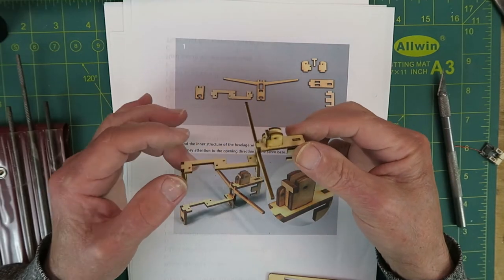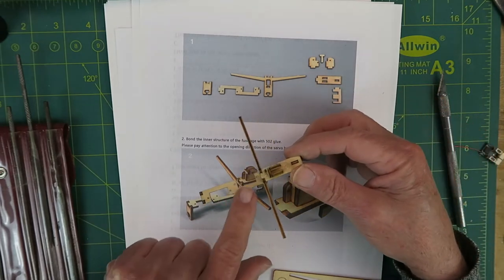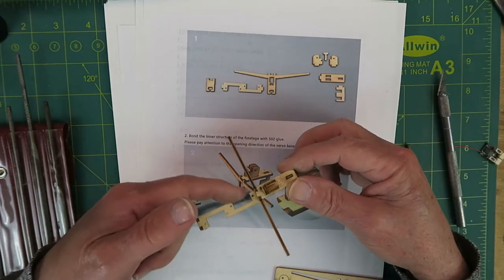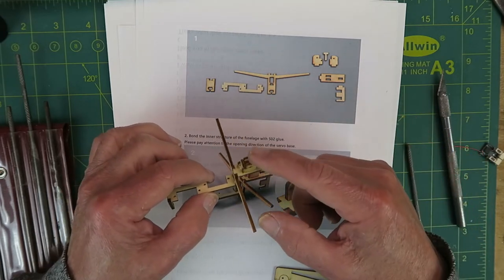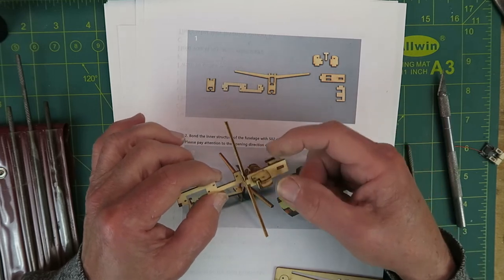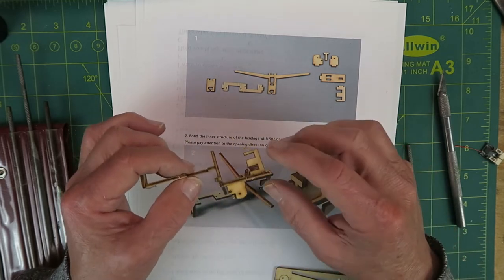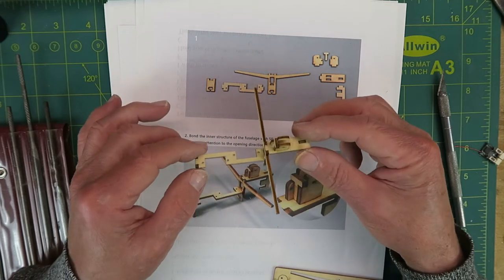First part is complete then. Nothing very much to note. As it says, pay attention to the servo mounts, get those cutouts on the correct side. The only other thing is these little curved pieces—the one on the inside has an extra hole in there, so just pay attention to that. Otherwise, pretty straightforward.